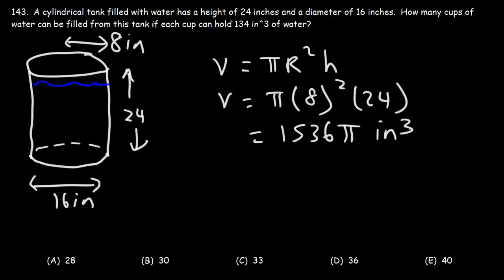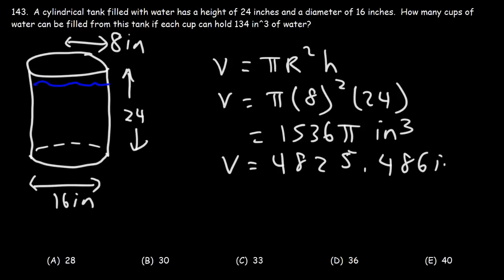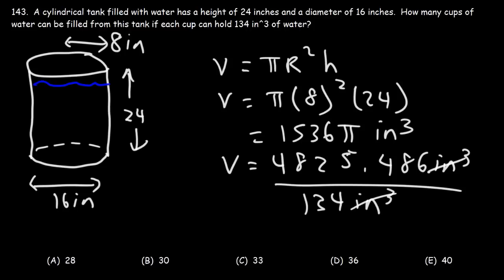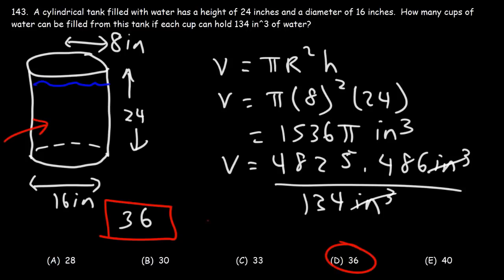Multiplying 1536 by π gives approximately 4825.486 cubic inches. Dividing that by 134 cubic inches per cup gives about 36.01, which means we can fill at least 36 cups. So answer choice D is correct.